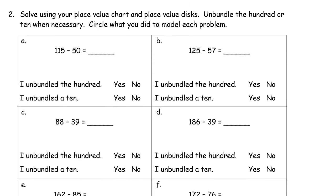Now, using a place value chart and place value disks is the best way to do these, but most of us don't have those at home. So you can draw HTO charts with chips. We're talking about unbundling hundreds or tens when you don't have enough ones to do your subtraction. This is the beginning of what's called the standard algorithm for subtraction, also known as borrowing subtraction.